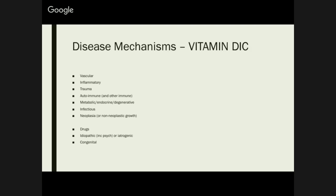So, disease mechanisms. First of all, a basic mnemonic to describe your disease mechanisms. If you just remember this, it'll pretty much get you places. The most important ones I will be going through, but keep this in the back of your head because it's a really good mnemonic and it will help you outside of PATH as well.